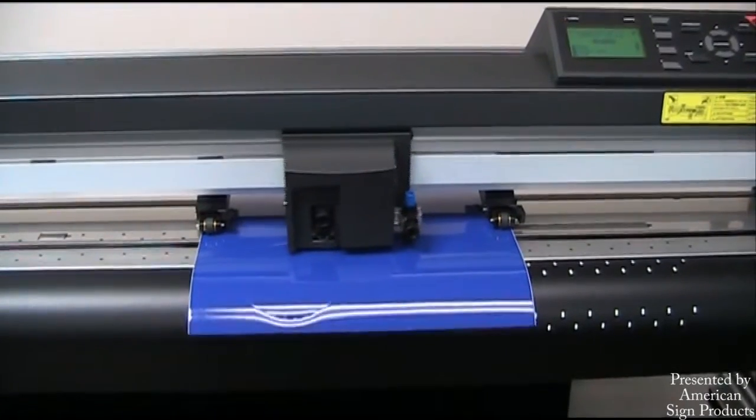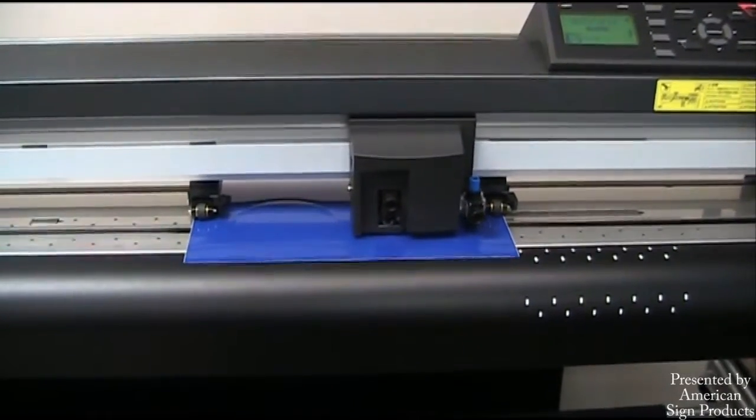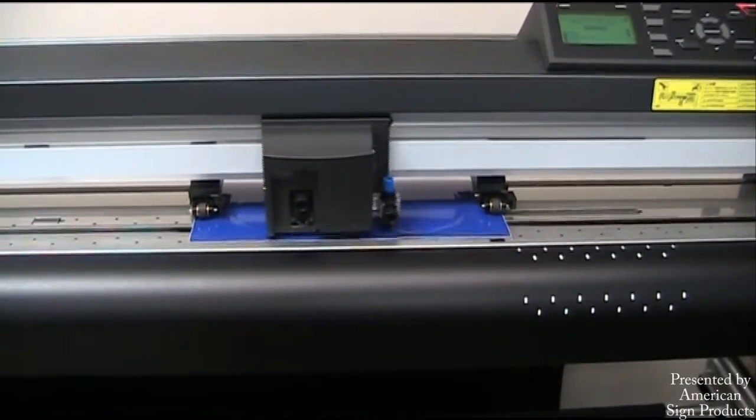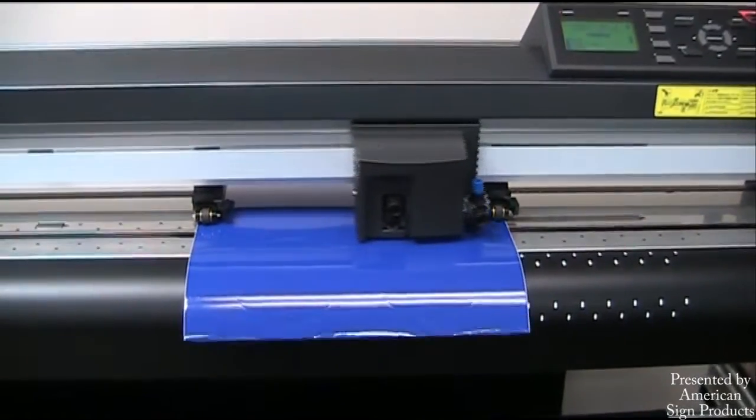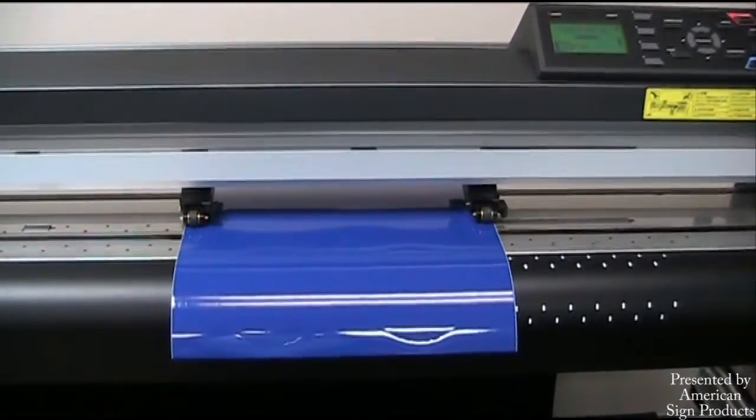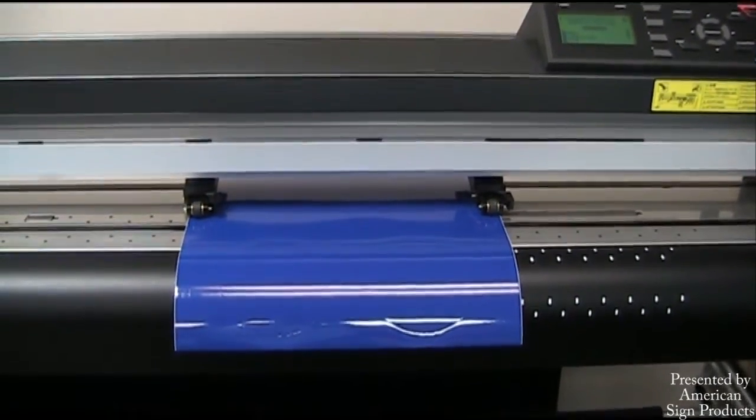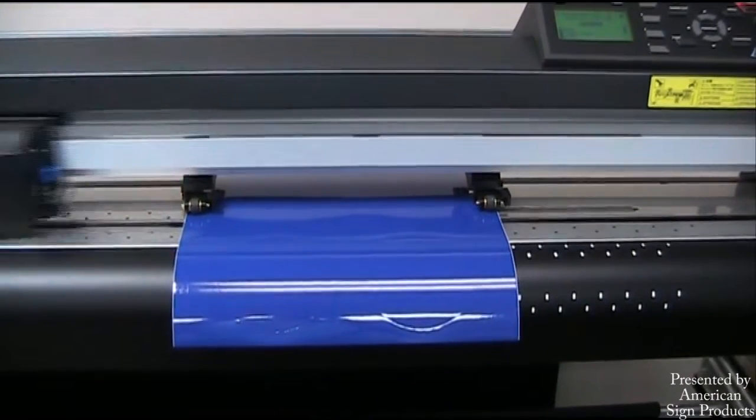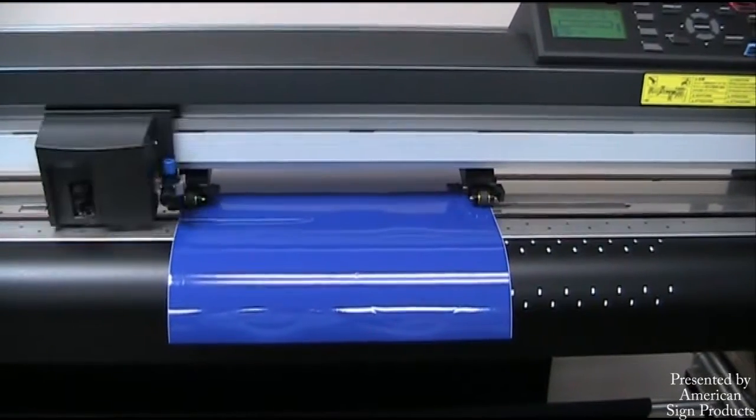You can see as the plotter does the perf cut or die cut that it's staggering the head up and down. And this particular plotter happens to be a 64 inch plotter, but they're also available down to 24 inches as well.